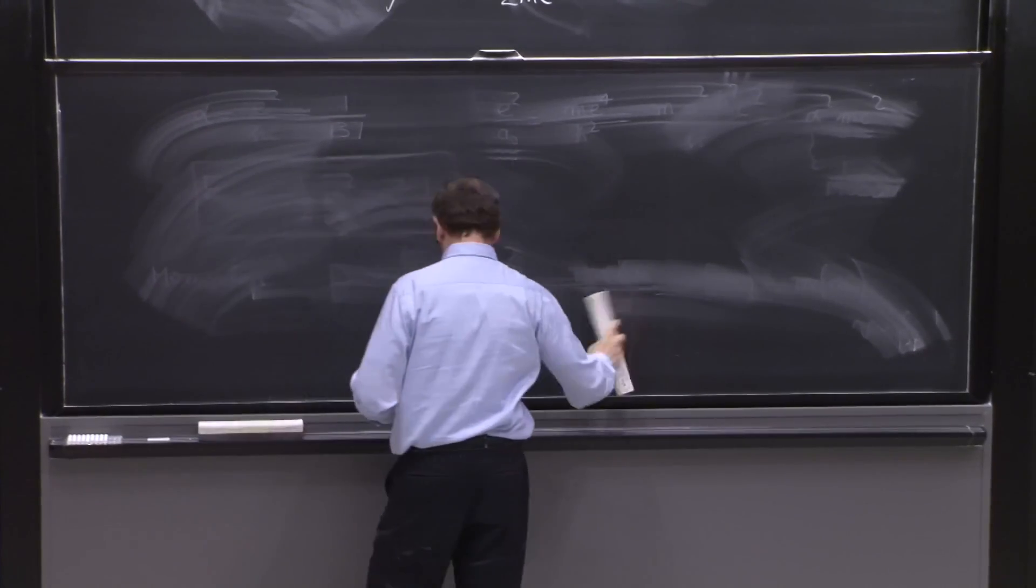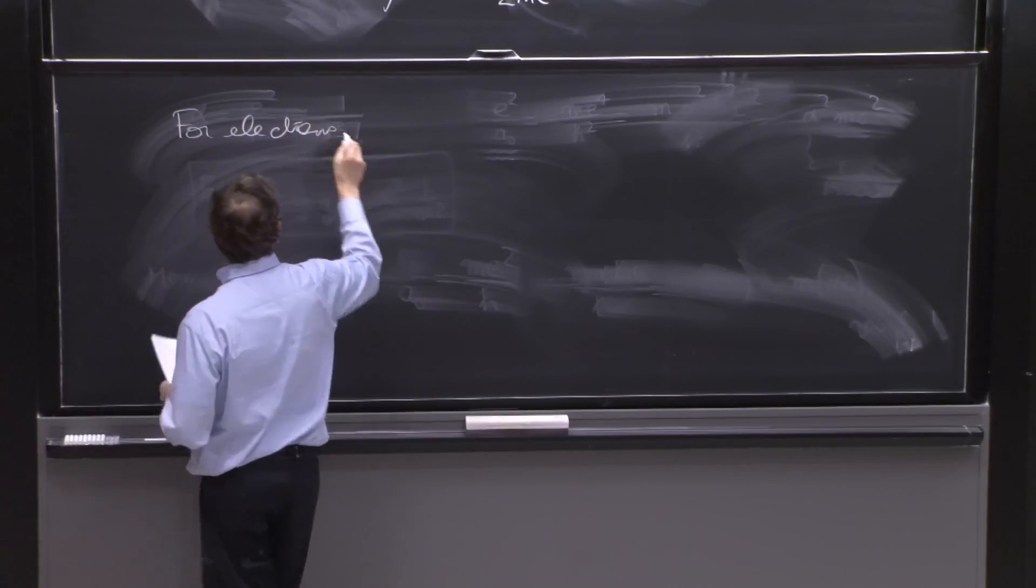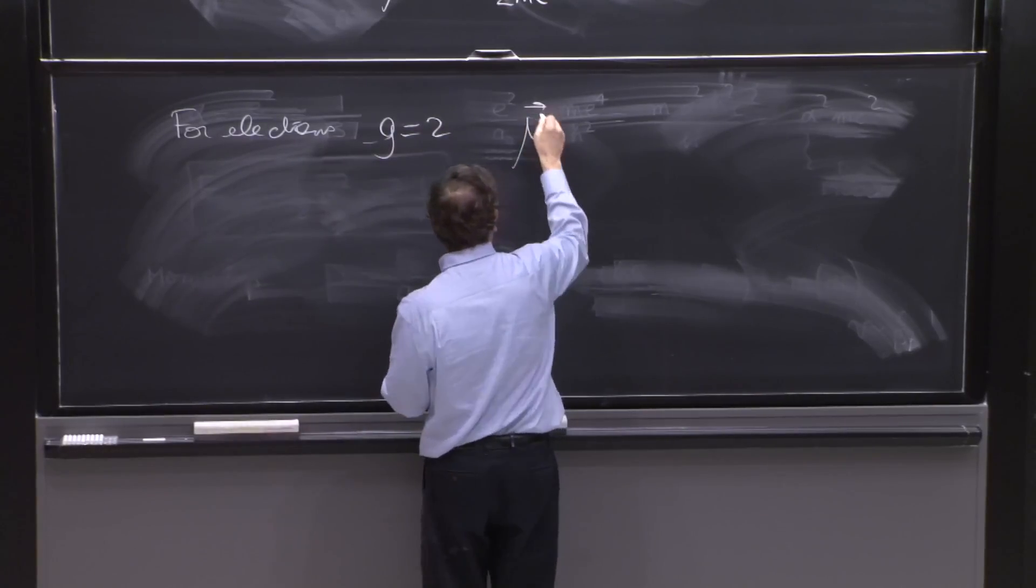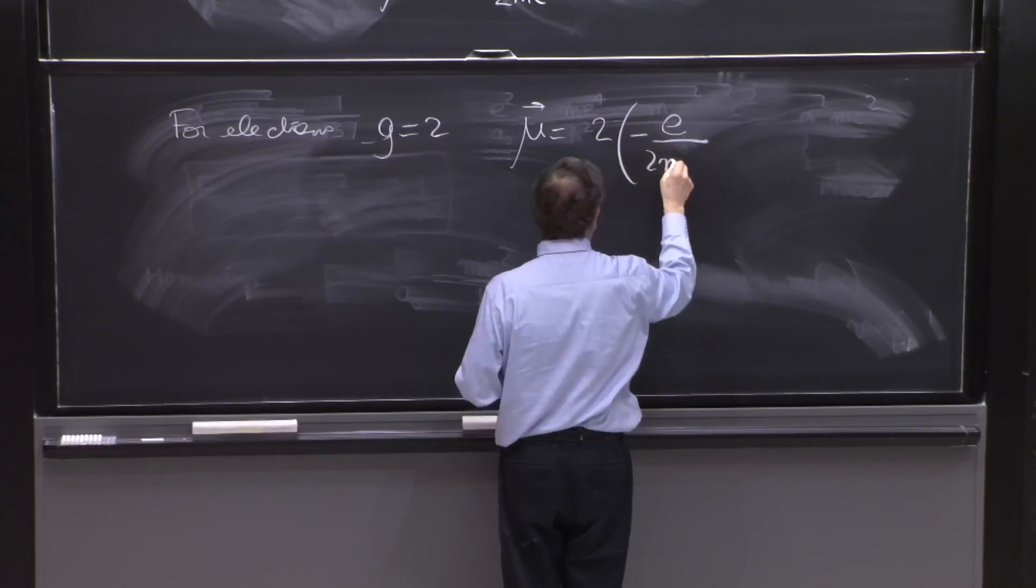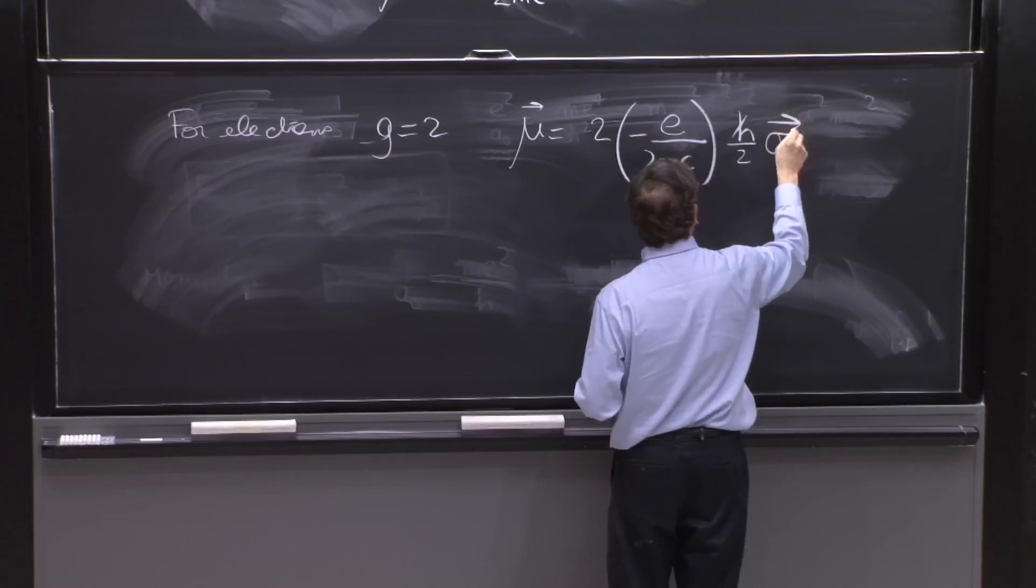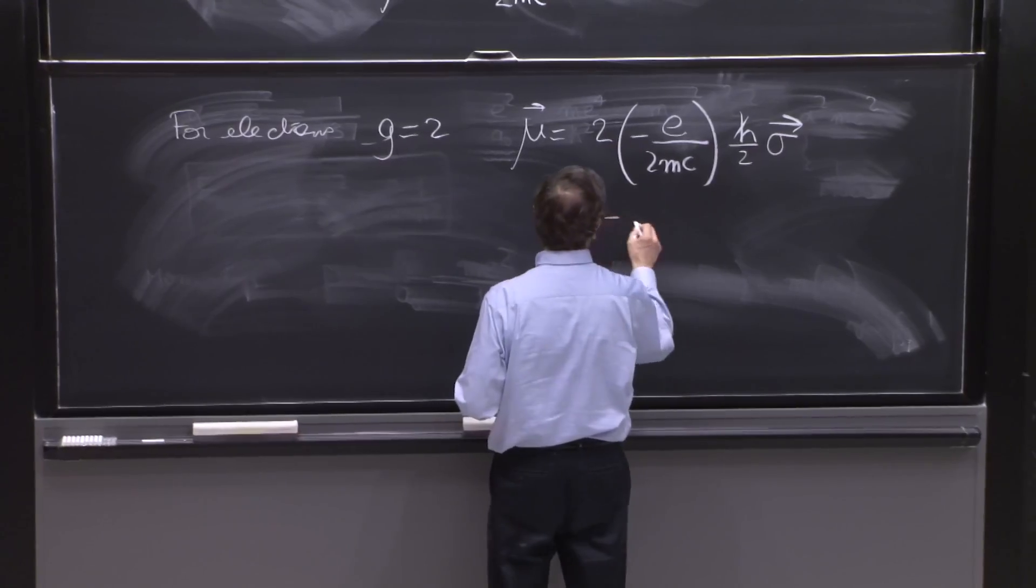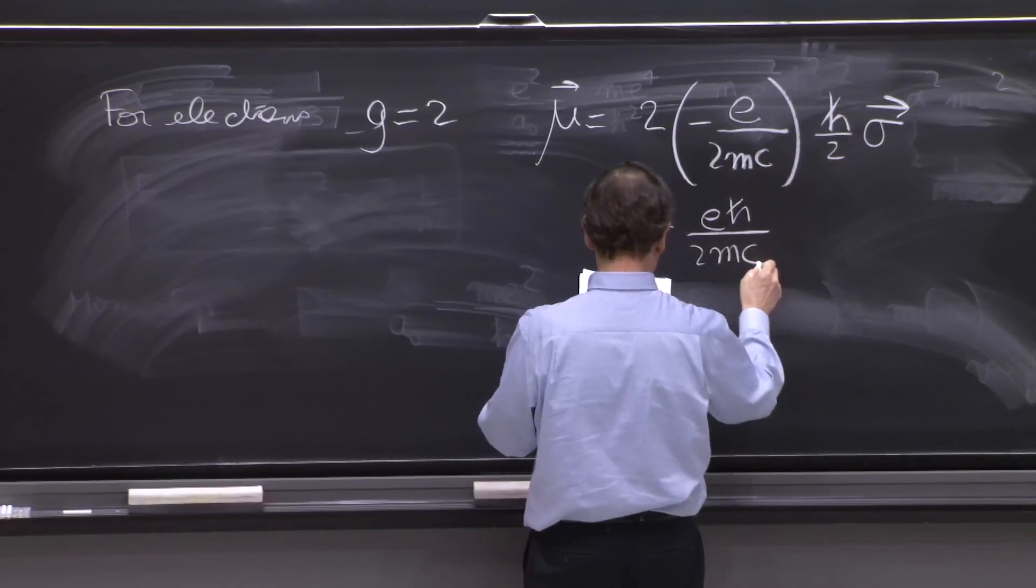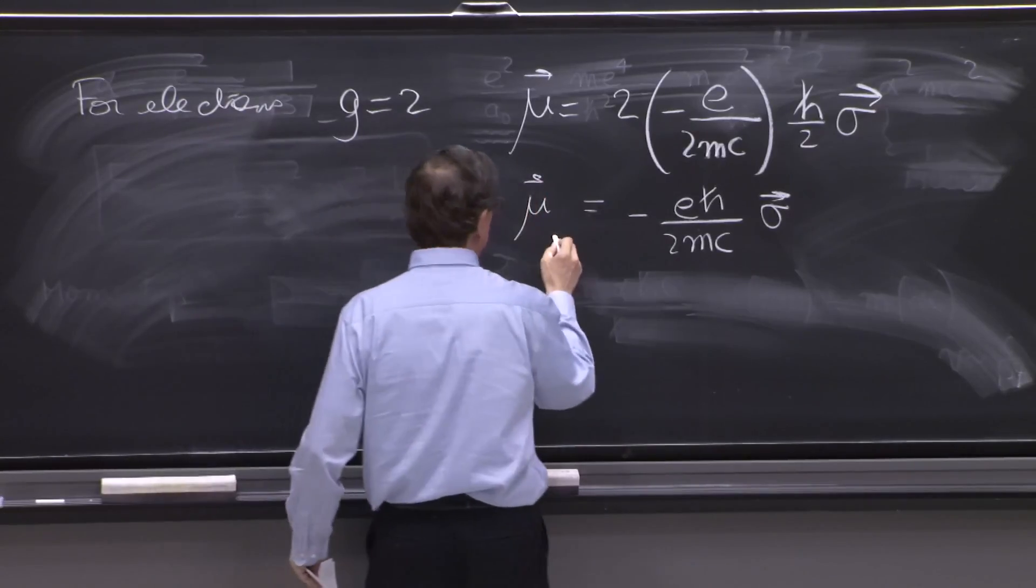And we get the following. So for electrons, g happens to be equal to 2. So mu is equal to 2 times minus e. The charge of the electron is minus e, 2mc. And the spin of the electron is h bar over 2 times sigma, the Pauli matrices. So this thing is minus e h bar over 2mc sigma, mu of the electron.